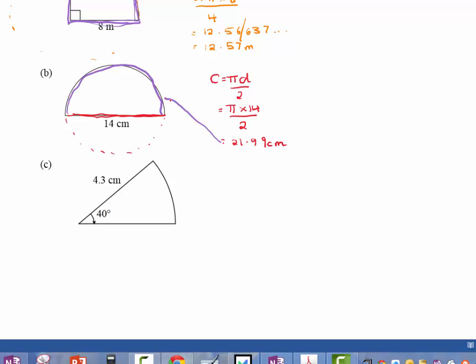Now this is only the circumference. So the only part this has given me is this curved part here. That's what this answer is, that curved part. But you're asked for perimeter. And perimeter is all around the shape,